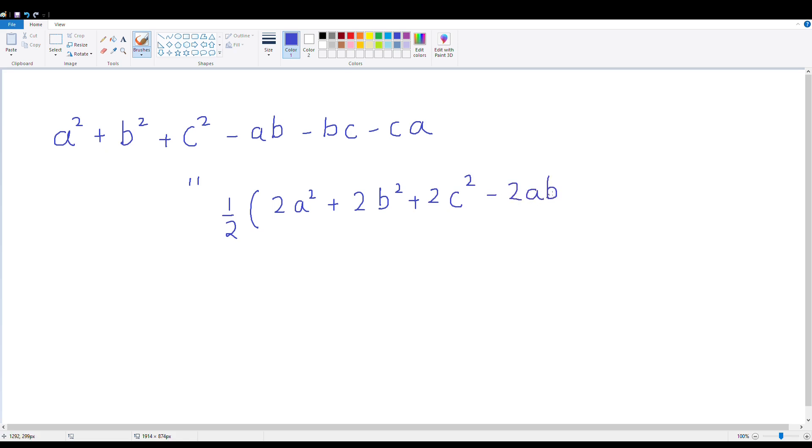We can adopt a strategy of completing the squares and we can see easily that it takes the shape of 1/2((a-b)² + (b-c)² + (c-a)²).